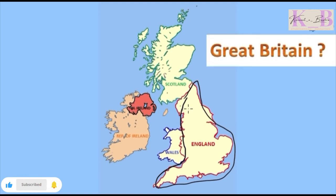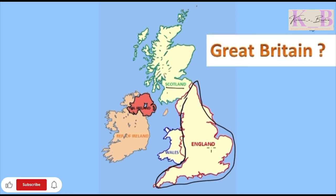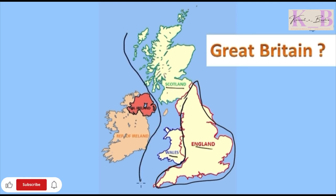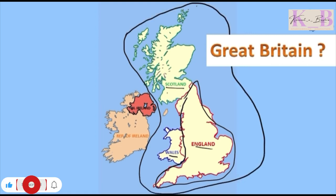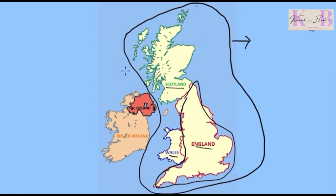Now, what is Great Britain? Great Britain consists of a total of three countries: first is Scotland, second is England, and third is Wales. When we combine these three countries together, that is called Great Britain.